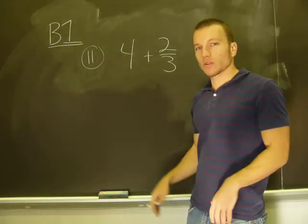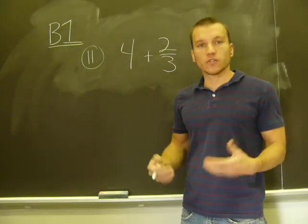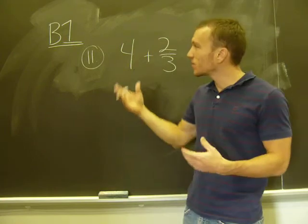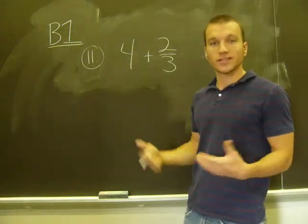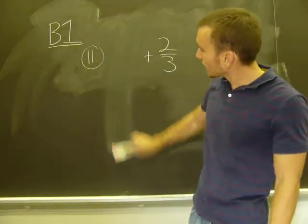So in order to add these two together, what I want to do is use the methods we've been using to add two fractions. But that's not a fraction. But we can always make four a fraction. We can always make an integer a fraction by putting it over one. Four over one is the same thing as four. So I'm just going to do that real quickly. Make that a fraction.